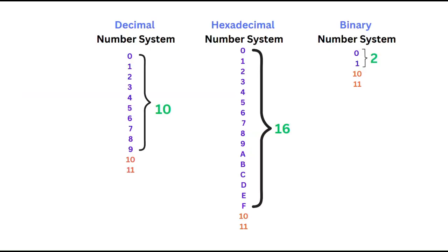Let's understand number systems first. In our daily routine life as human beings we use the decimal number system. The word 'decimal' comes from the number 10, and the number 10 comes from the 10 types of symbols in the decimal number system. The numbers we know are from 0 to 9 — that is 0, 1, 2, 3, 4, 5, 6, 7, 8, 9 — these 10 symbols represent the decimal number system. When we start counting from 0 to 9 we consume all the symbols.